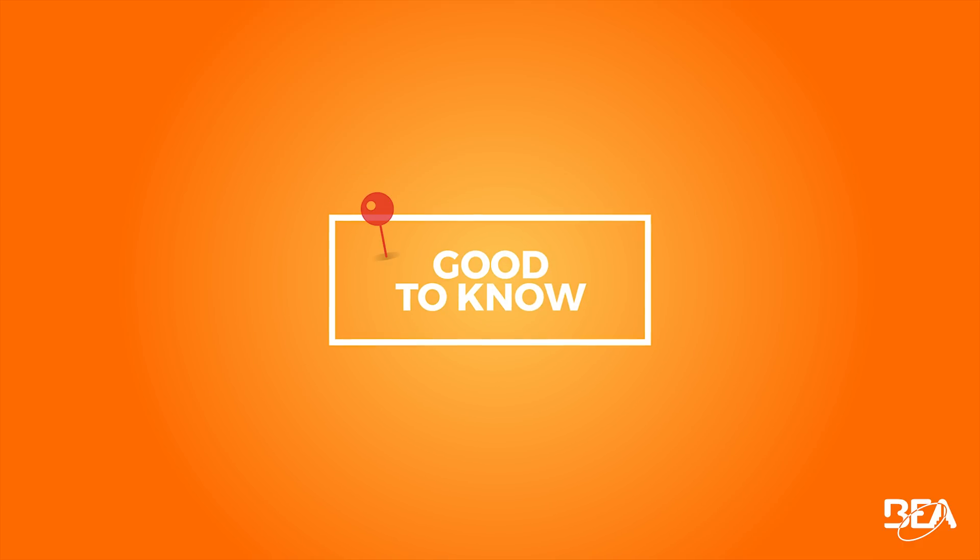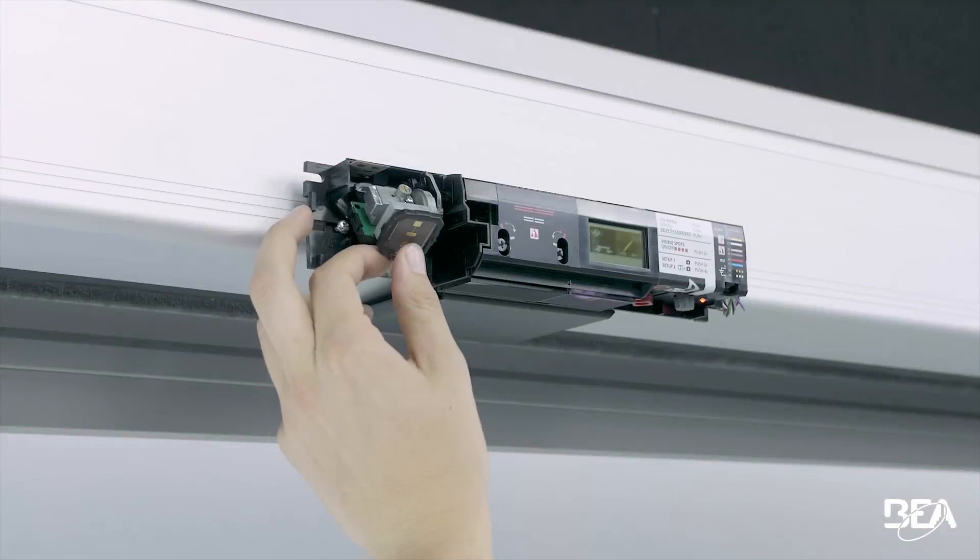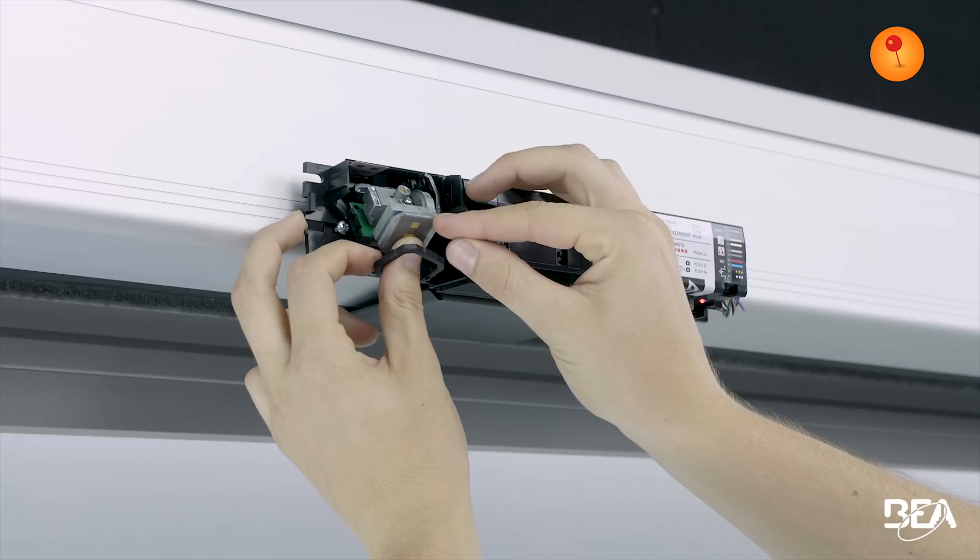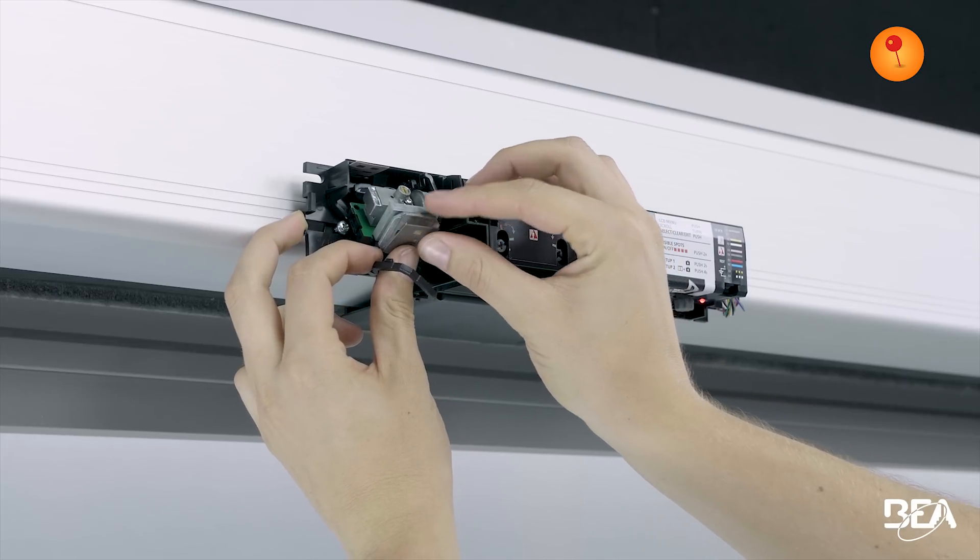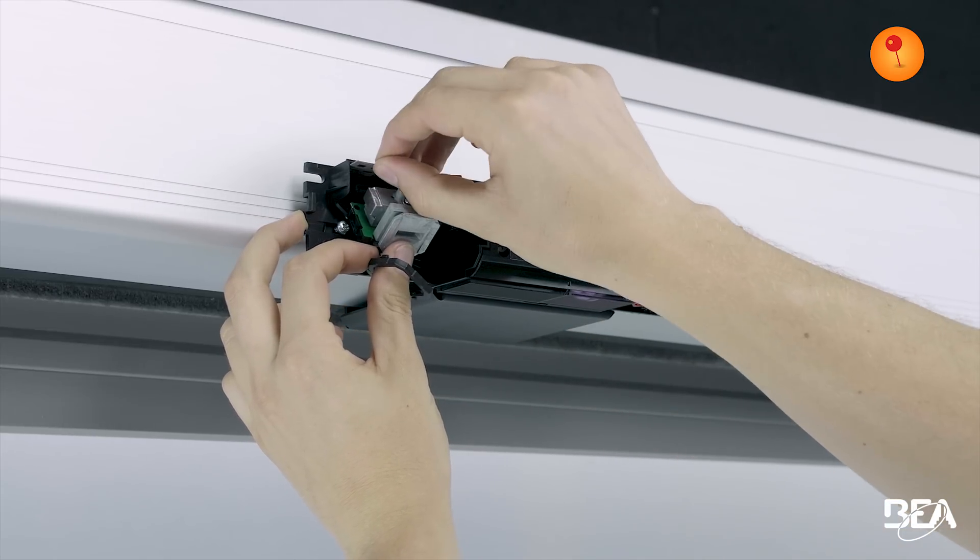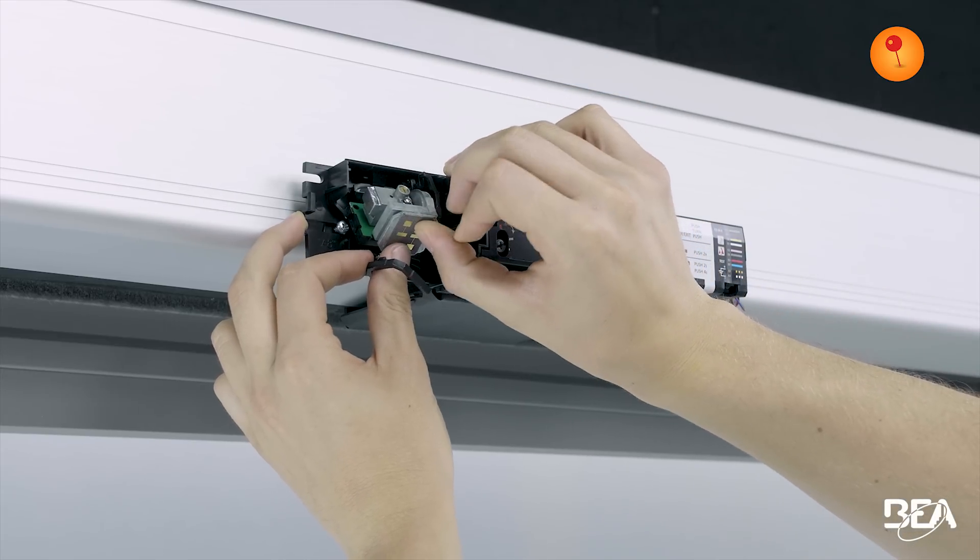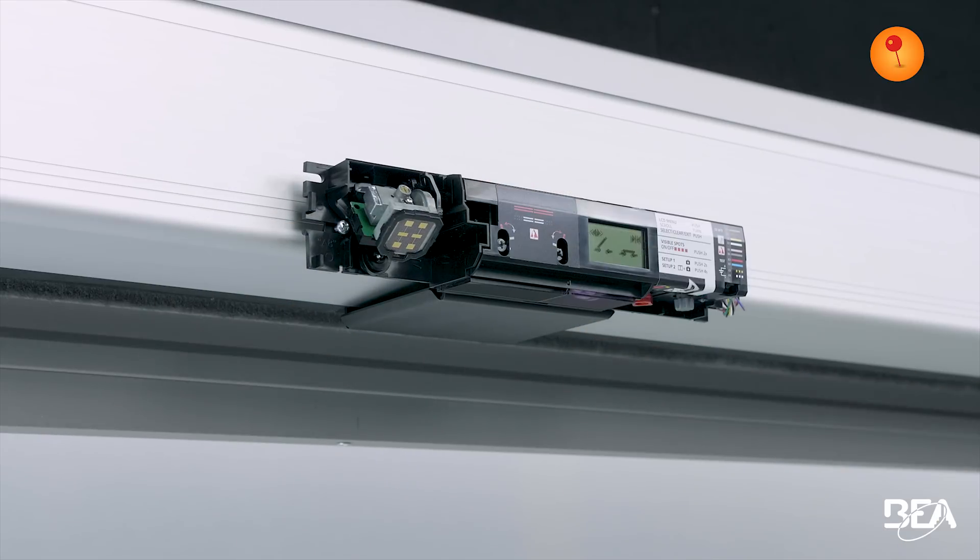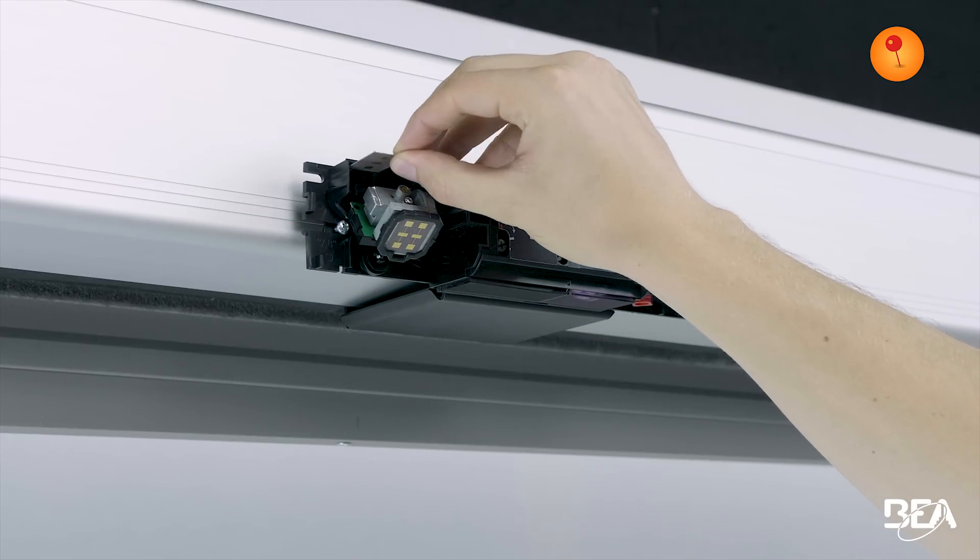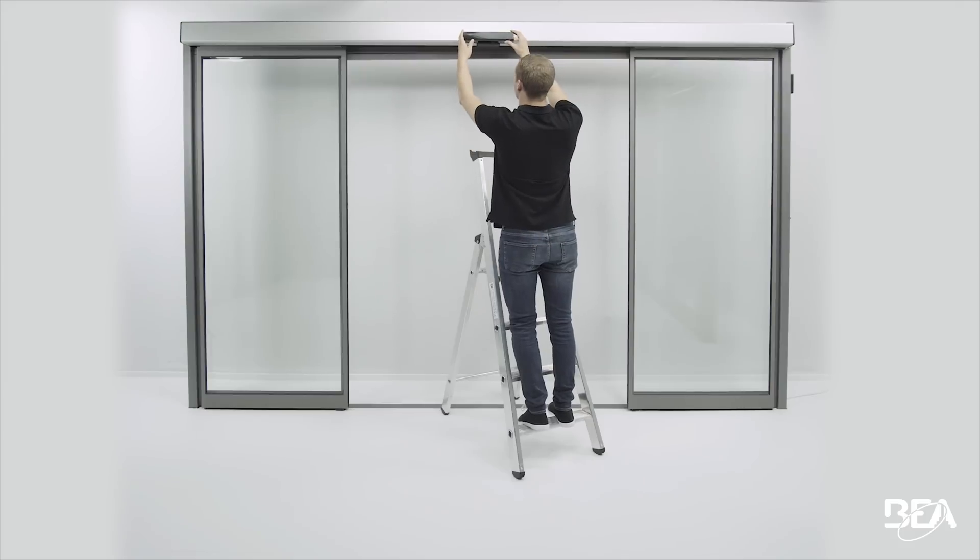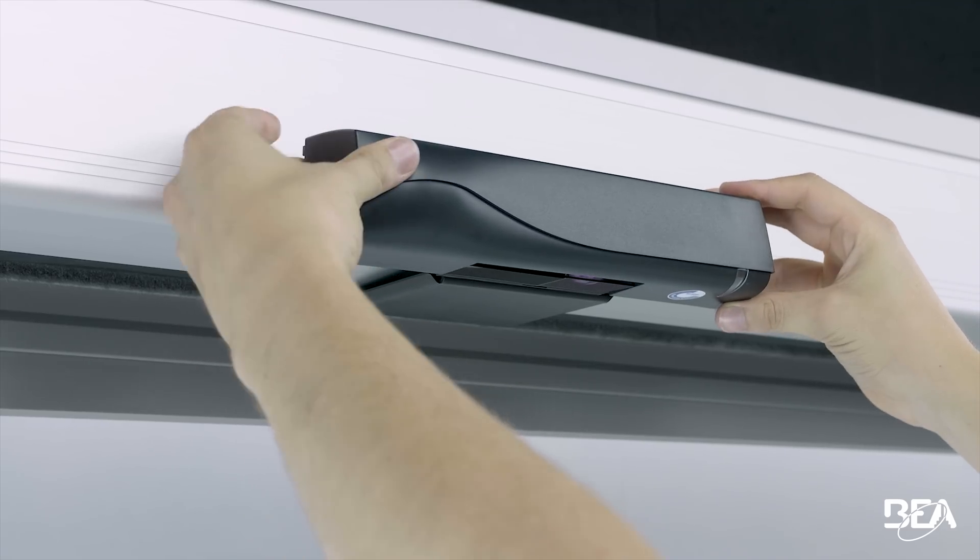Good to know. To change the antenna, unclip the black frame, exchange the antennas and clip the frame back on. The basic installation is now completed and you can close the sensor by clipping the cover back on the base.